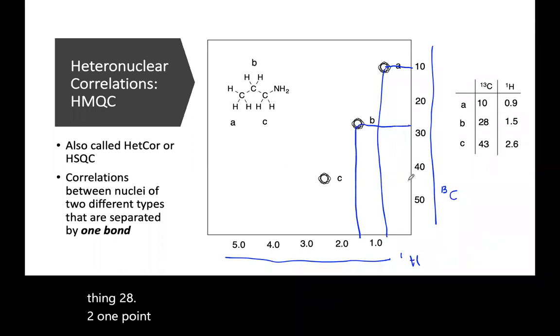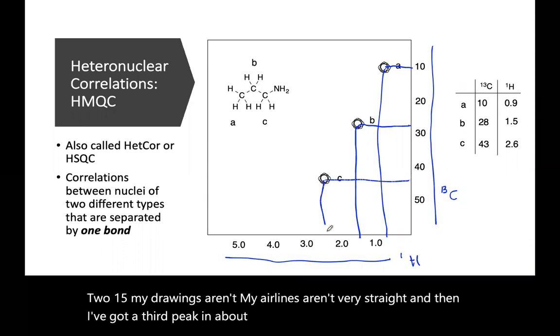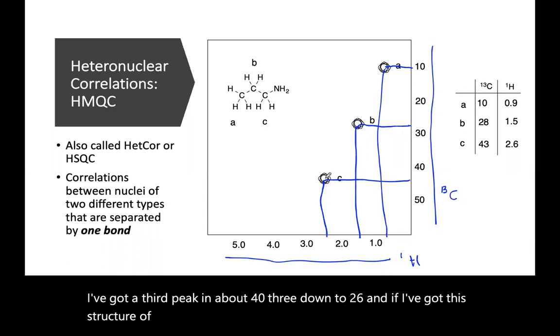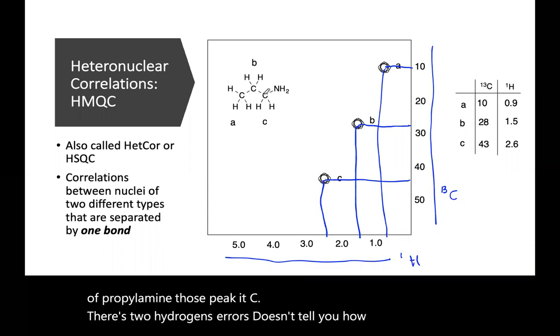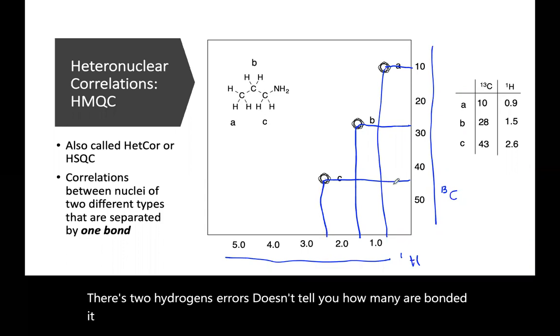I've got a third peak at about 43, down to 2.6. And if I've got this structure of propylamine, those peaks at C - there's two hydrogens, it just doesn't tell you how many are bonded. It just tells you which peak is correlated to which peak.